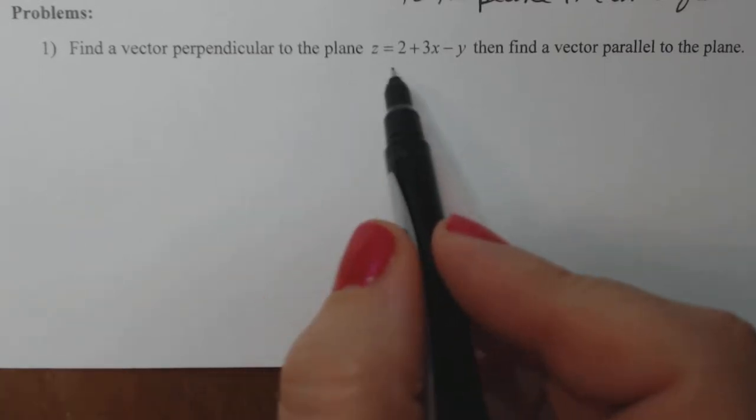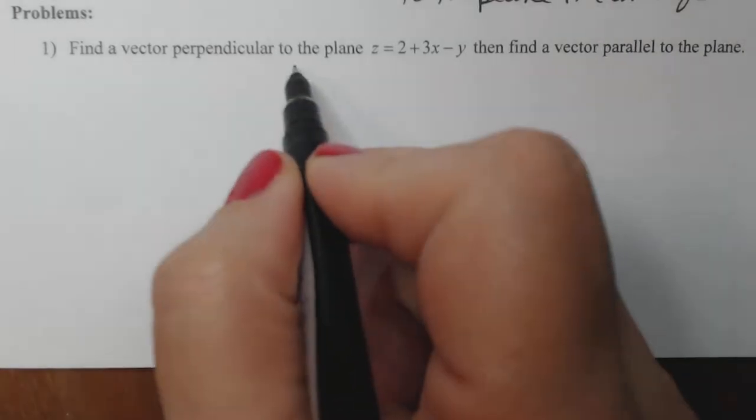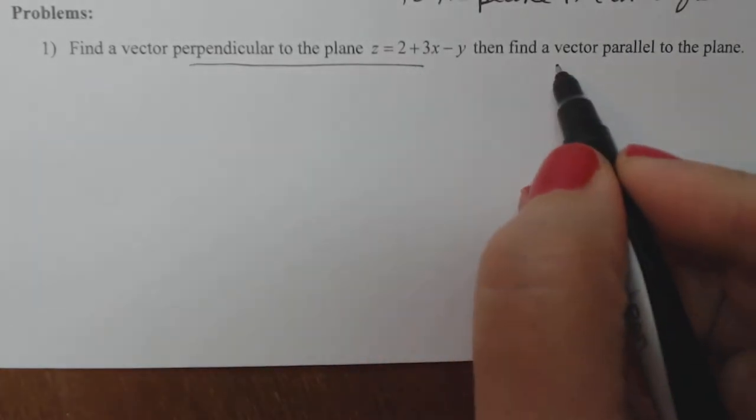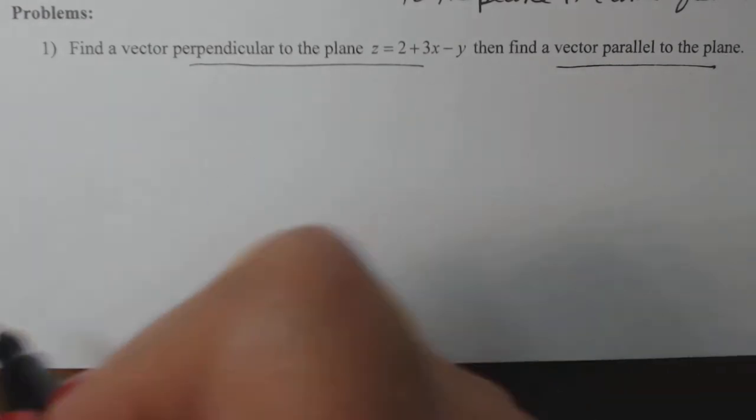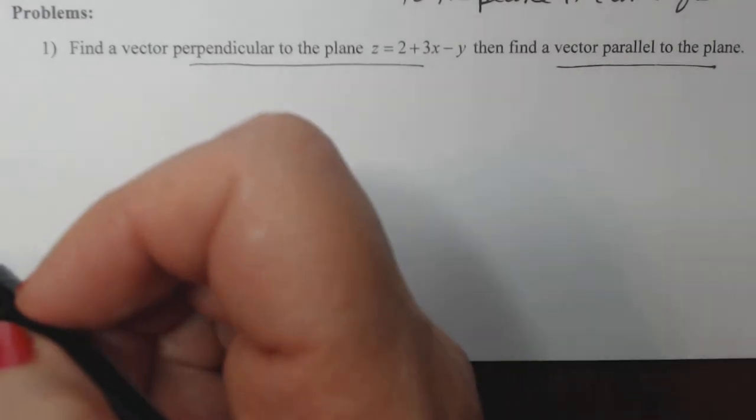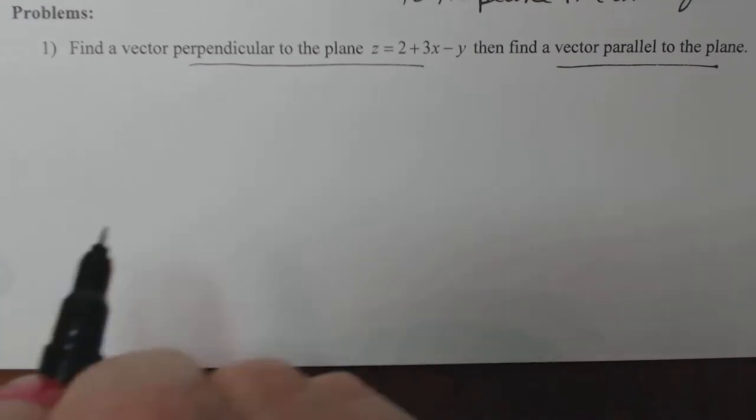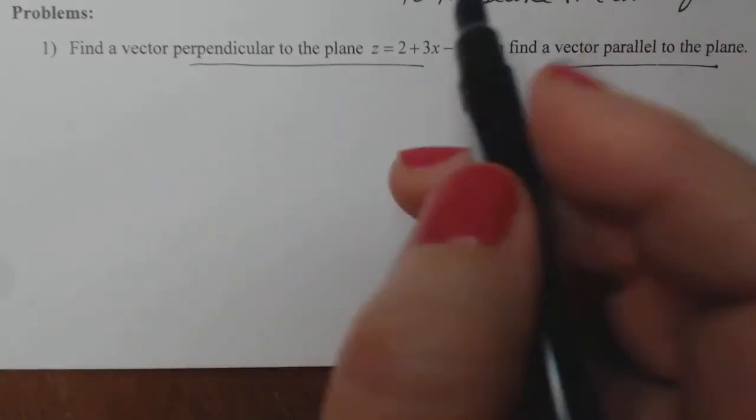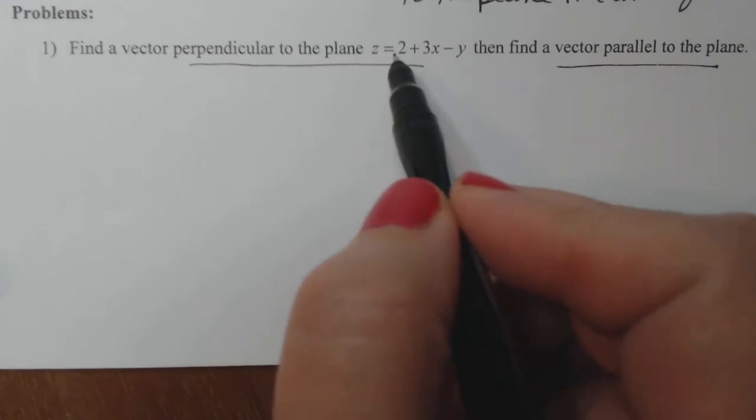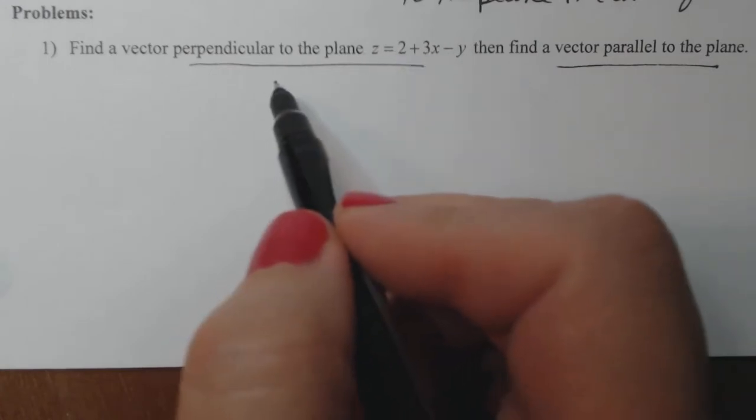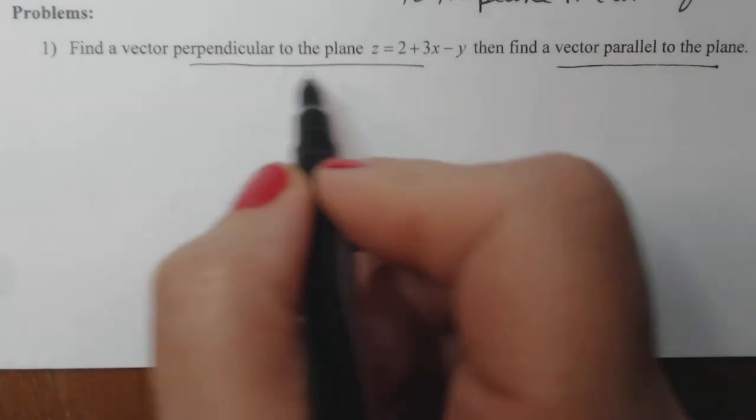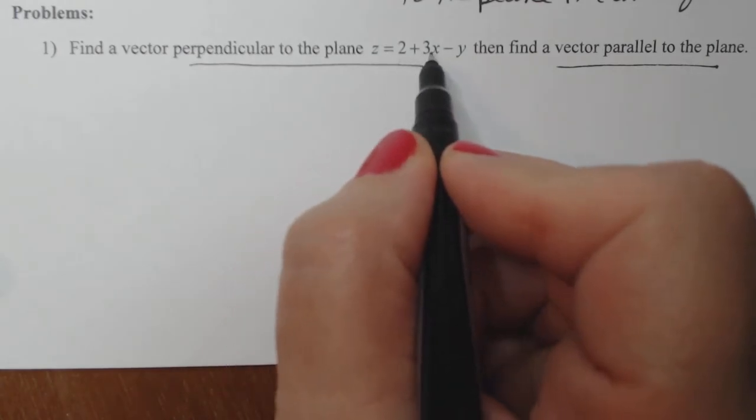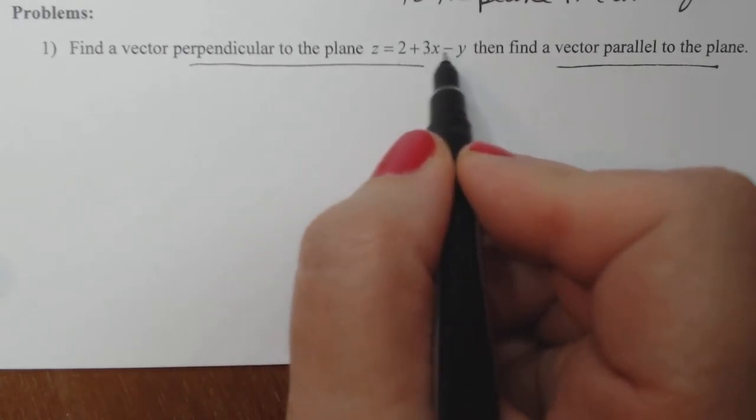So we're going to find a vector perpendicular to this plane, part one, and then find a vector parallel to the plane. We've actually done this already, but I'm going to redo it because it's an important exercise. The first thing we learned when we want to do a vector perpendicular to plane is to rewrite this plane, put all the variables on one side and the constant on the other. So if I do that, I'm going to move the 3x and minus y over.